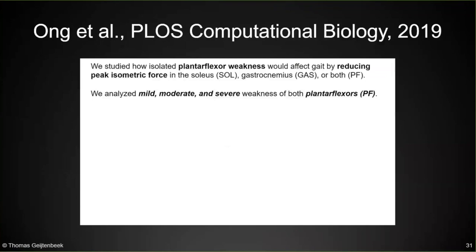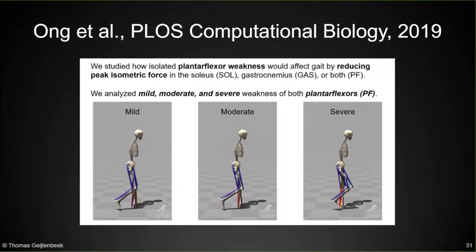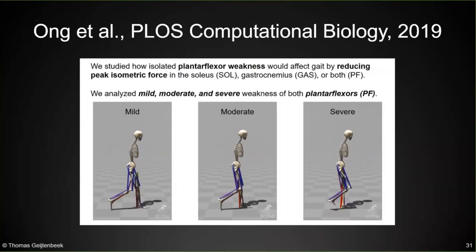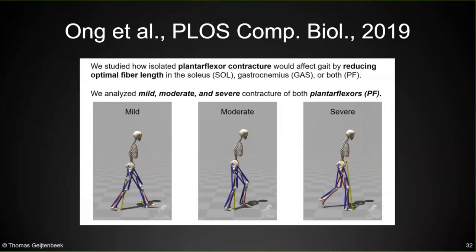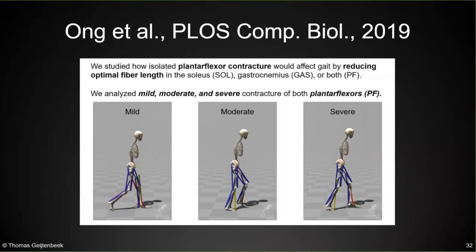Another example is some of the work by Ong et al. This was recently published in PLOS Computational Biology. In this study, we investigated the effect of plantar flexor weakness and contracture. This is what happens if you weaken the plantar flexors for a gait example — you can see the different stages of weakening and the different results that occur. For contracture, the optimal fiber lengths of the soleus and gastrocnemius are reduced. If you do that, you see this toe-tipping gait that automatically emerges, and it also matches experimental data quite well.